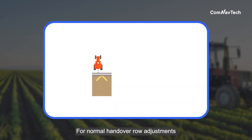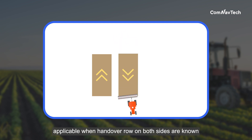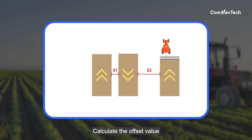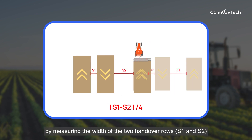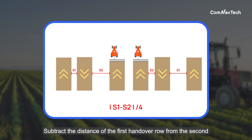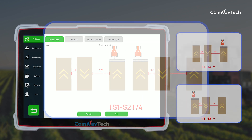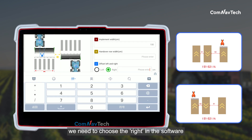For normal handover row adjustments, applicable when handover rows on both sides are known and the offset value can be correctly calculated: measure the width of the two handover rows S1 and S2, subtract the distance of the first handover row from the second, then divide by four. Choose 'right' or 'left' in the software accordingly.